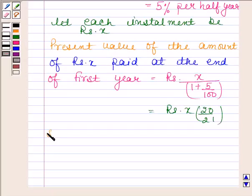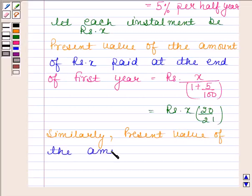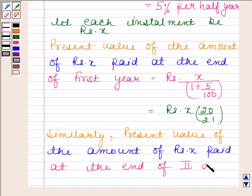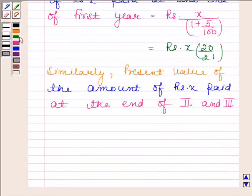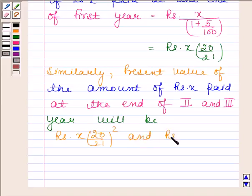Now similarly, present value of the amount of x rupees paid at the end of second and third year will be rupees x into 20 by 21 whole square and rupees x into 20 by 21 whole cube respectively.